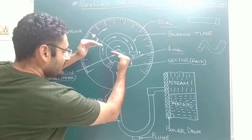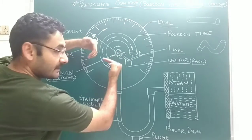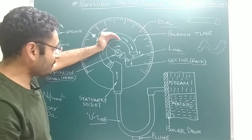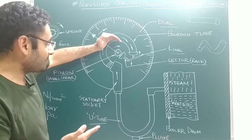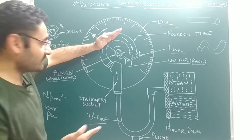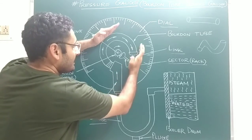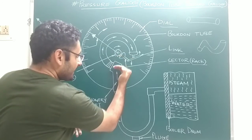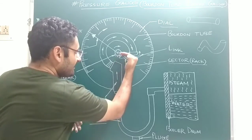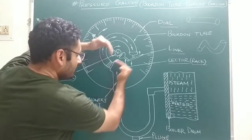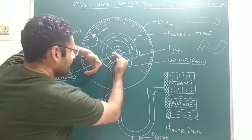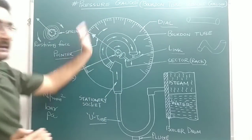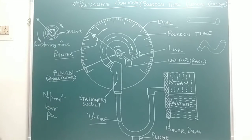When the rack moves in the downward direction, it causes the pinion to rotate in the clockwise direction. As the pinion is connected with the pointer, the pointer also rotates in the clockwise direction. The pointer then indicates how much pressure is present inside the boiler.